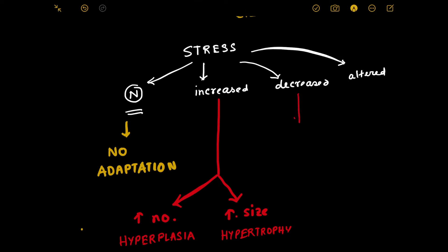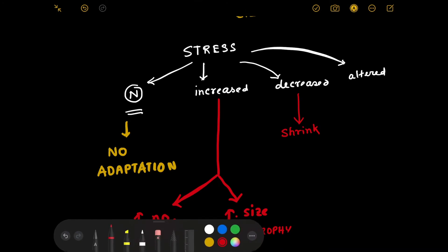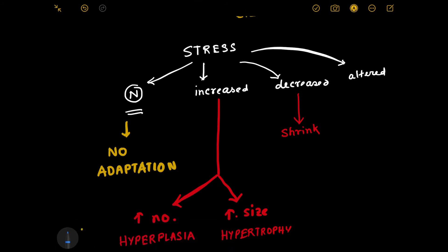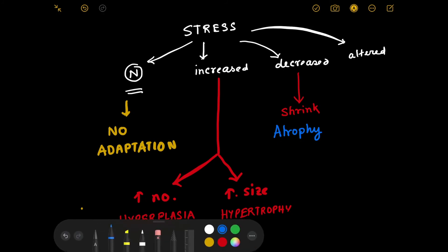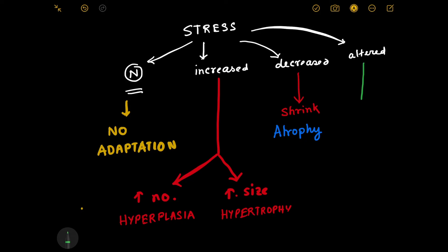And now if the stress gets altered, in that situation what's going to happen? Like if a doctor is given to solve a computer coding problem, it's most likely that the doctor won't be able to solve that computer coding problem. In that situation, you have to bring in a computer engineer. Similarly, if the stress is altered, there has to be something known as metaplasia.